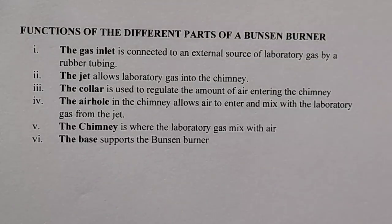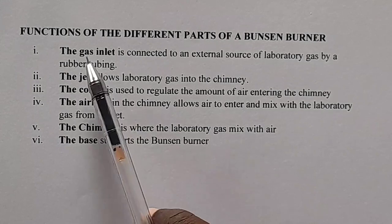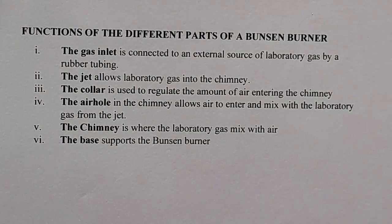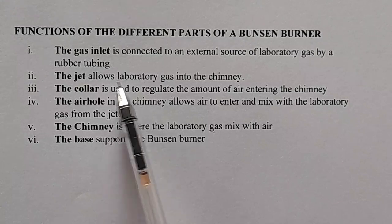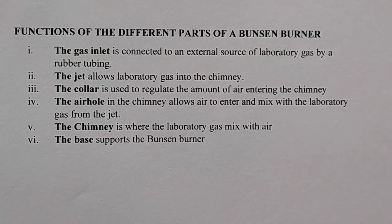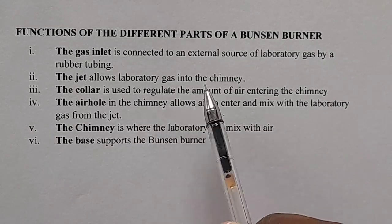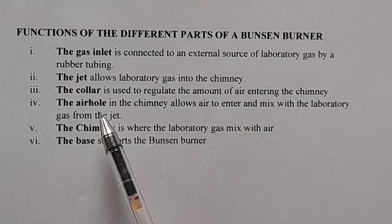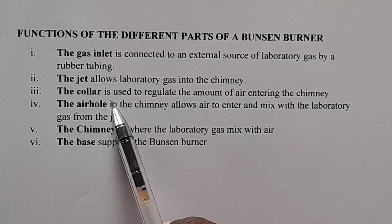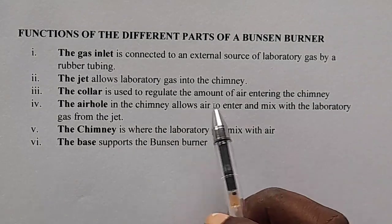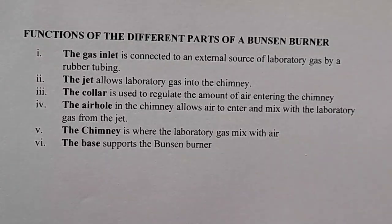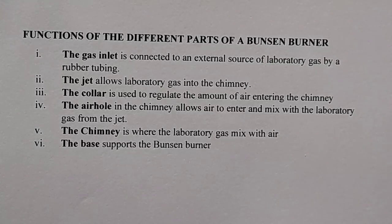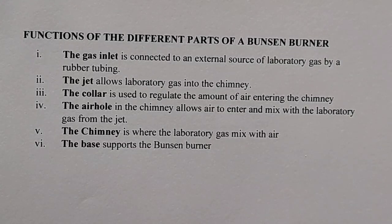The functions of the different parts of the Bunsen burner: the gas inlet is connected to an external source of laboratory gas by rubber tubing. The jet allows laboratory gas into the chimney. The collar is used to regulate the amount of air entering the chimney. The air hole in the chimney allows air to enter and mix with the laboratory gas from the jet. The chimney is where laboratory gas mixed with air forms the flame.